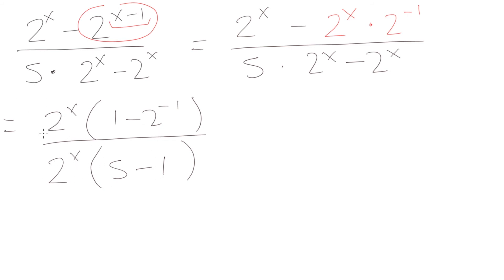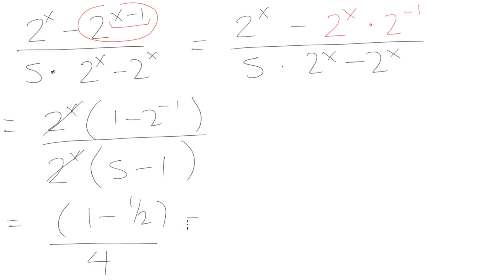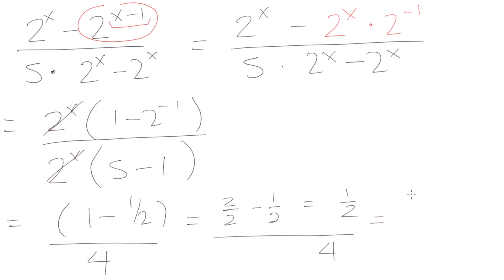We now have a common factor of 2^x in both numerator and denominator, so they cancel. We're left with (1 minus 2^(−1)) divided by (5 minus 1). Since 2^(−1) equals 1 half, the numerator becomes 1 minus 1 half. Converting 1 to 2 over 2, we get 2/2 minus 1/2 equals 1/2. The denominator is 4. So we have (1/2) divided by 4, which equals 1 half times 1 quarter, giving a final answer of 1 over 8.